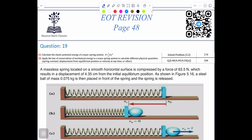Hello students. In this video we are going to solve question number 19, also known as question number 4 — the writing part or free response questions. The formula for elastic potential energy of a mass-spring system is U equals one-half k x squared. Apply the law of conservation of mechanical energy: total energy equals kinetic energy plus potential energy. I'm going to solve four questions.